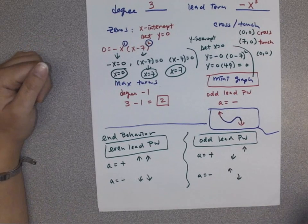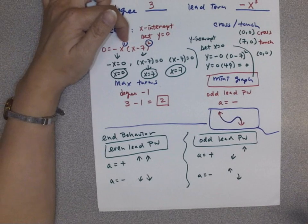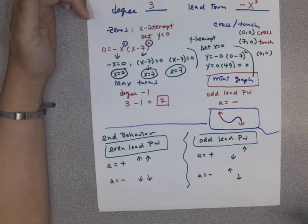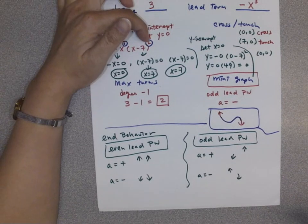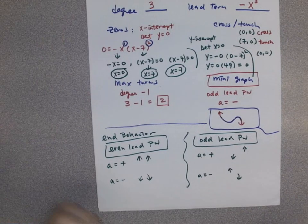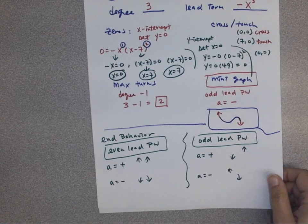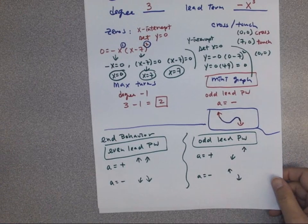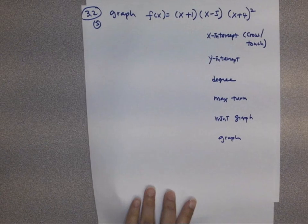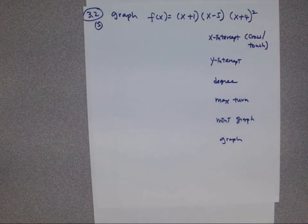For crossing and touching: crossing is odd-power zero, touching is even-power zero. One more question for chapter 3.2 — pause the video and write down the question if you need it.